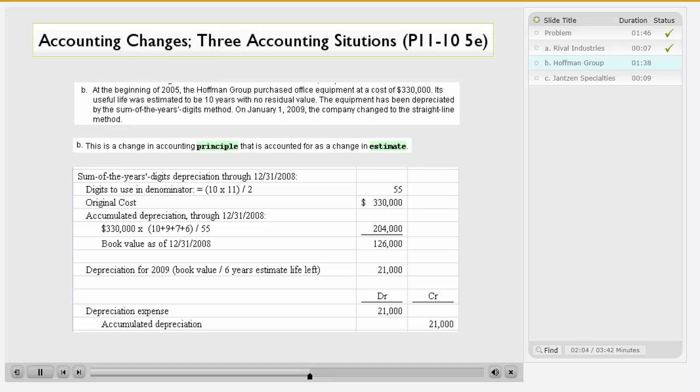So, the first thing we need to do is determine the book value of the asset as of 12-30-2008. We know they were using sum of years digits. It had a 10-year life. So, we calculate the digits to be used by taking 10 times 11 and dividing that by 2, and we come up with 55 years. The original cost was $330,000, and there was no residual value.